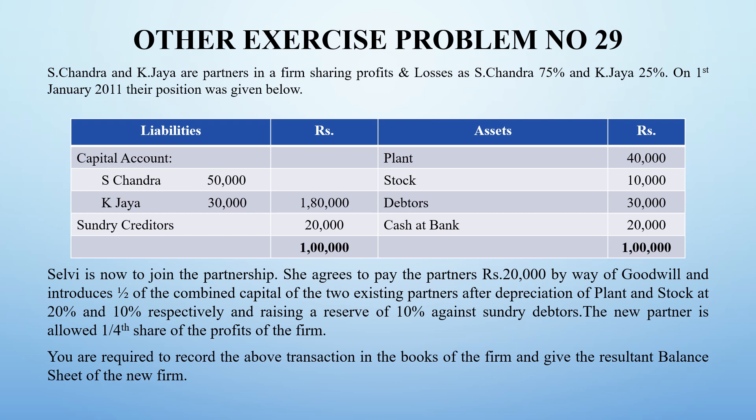This is S. Chandra and K. Jaya. They share profit or loss in a 3 is to 1 ratio - 75 comes 3 times and 25 comes 1 time. Dividing by 5, we get 3 is to 1 ratio, and they share profit or loss in this 3 is to 1 ratio.